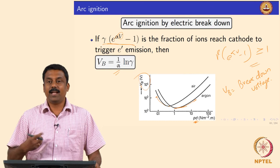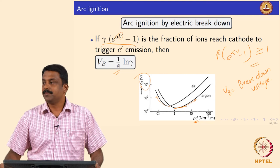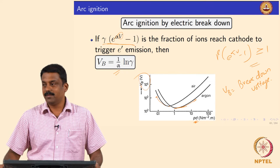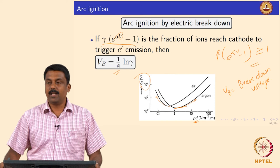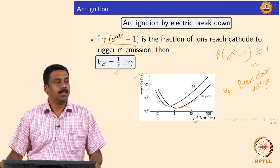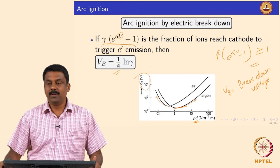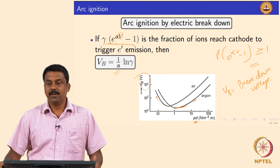We get the breakdown voltage by calculating the avalanche factors — the number density of ions and electrons. So for a given pressure and given distance between cathode and anode, we know what the breakdown voltage will be.